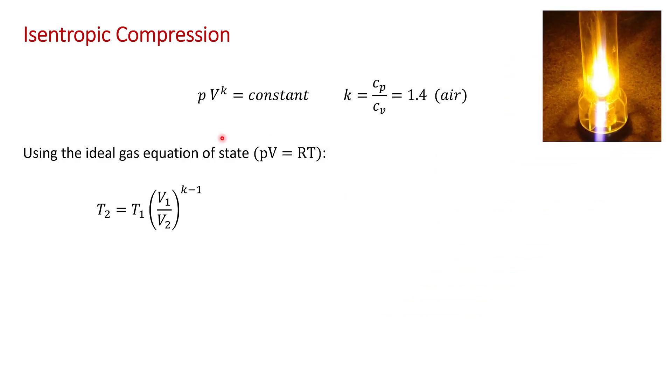Using the fact that PV to the k equals a constant, along with the ideal gas equation of state, PV equals RT, it's relatively easy to show that the temperature at the point of maximum compression is equal to the initial temperature times the compression ratio raised to the power of k minus 1. Now for air, I mentioned that the ratio of the specific heats is 1.4, so this becomes T1 times the compression ratio raised to the power of 0.4.